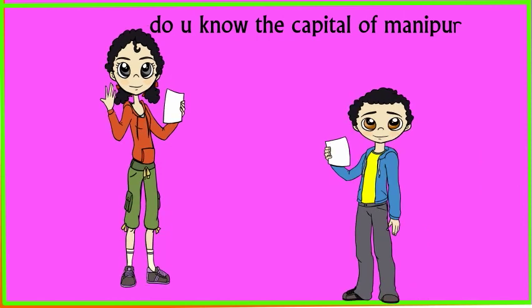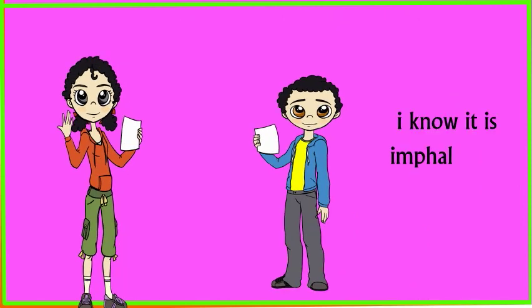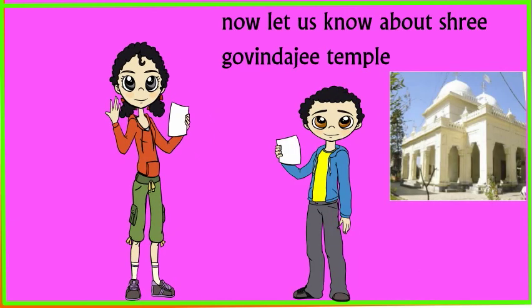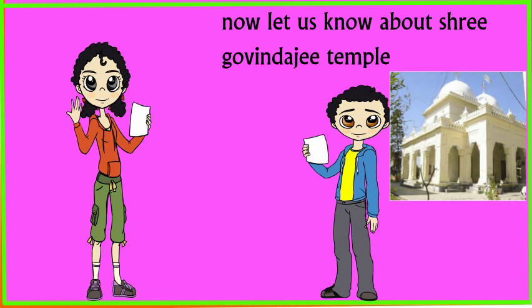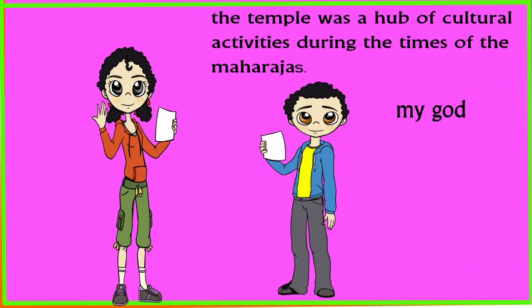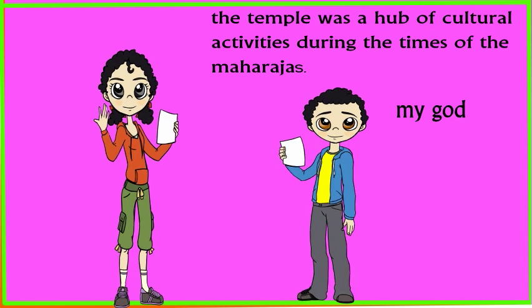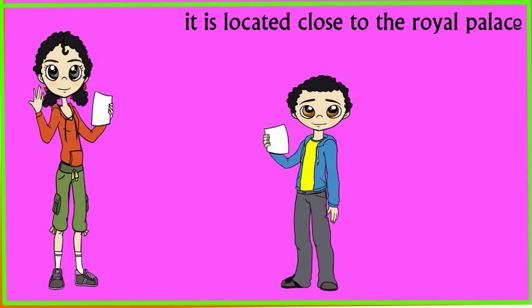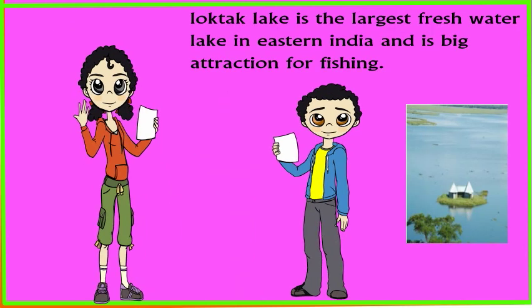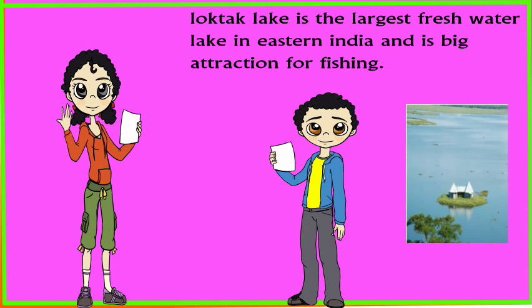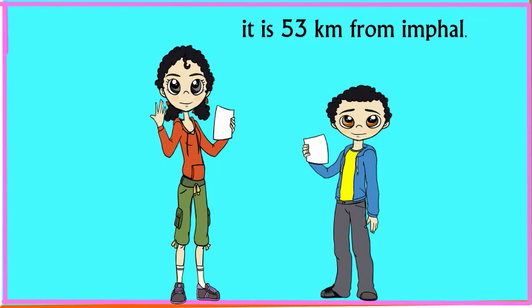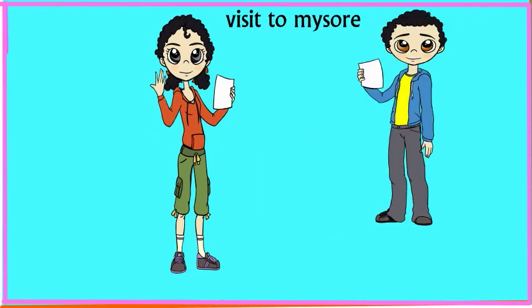I know it. It is Imphal. You are right. Now let us know about Shri Govindarji Temple. The temple was a hub of cultural activities during the times of the Maharaja. It is located close to the royal palace. Loktak Lake is the largest freshwater lake in eastern India and the only floating national park in the world. It is 53 km from Imphal. Visit to Mysore.